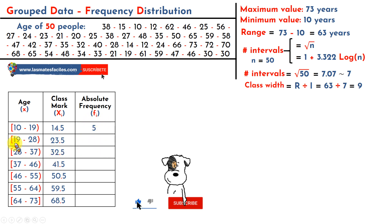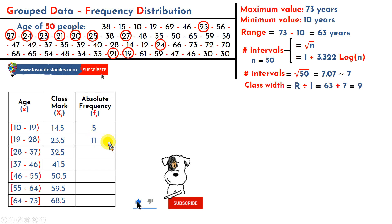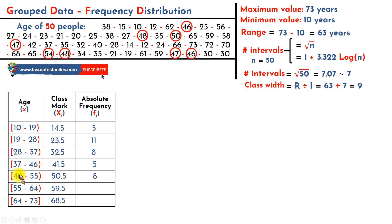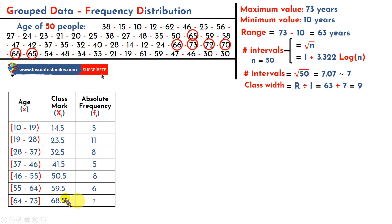I analyze the next interval, between 19 and 28: here we have 11 people who are 19 or older but younger than 28. The next interval, between 28 and 37, has 8 people. The following interval has 5 people. Then 8 people who are 46 or older but younger than 55. There are 6 between 55 and less than 64, and finally 7 between 64 and 73, including 73. The sum of the absolute frequencies must equal 50 — if not, something is wrong and I need to count again.